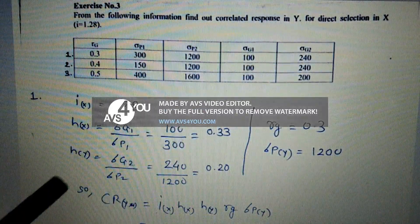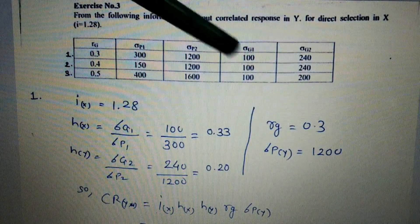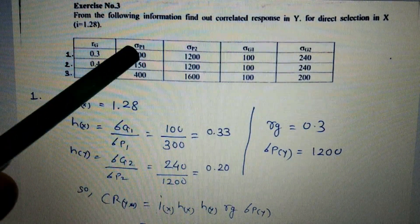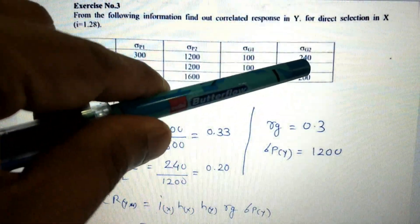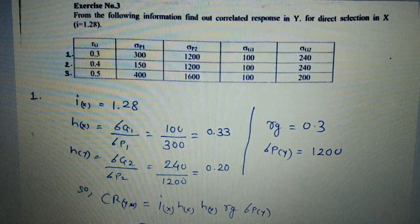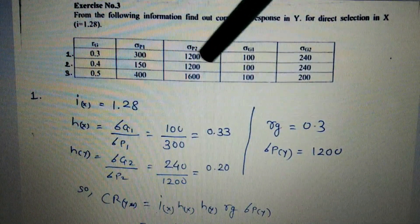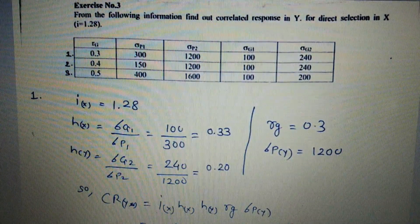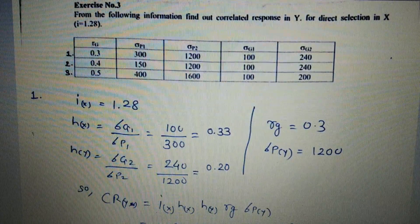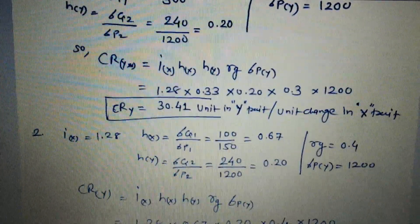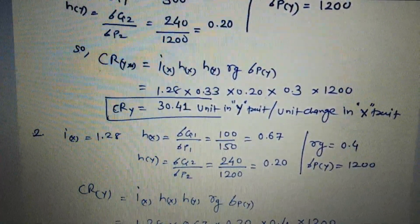Since values are given as standard deviations, square root of heritability is simply the genotypic SD divided by phenotypic SD. So h_x = 100/300 = 0.33 and h_y = 240/200 = 0.20. With rg = 0.30 and σ_Py = 200, the correlated response CR_y = 30.41 units in the Y trait per unit change in the X trait.